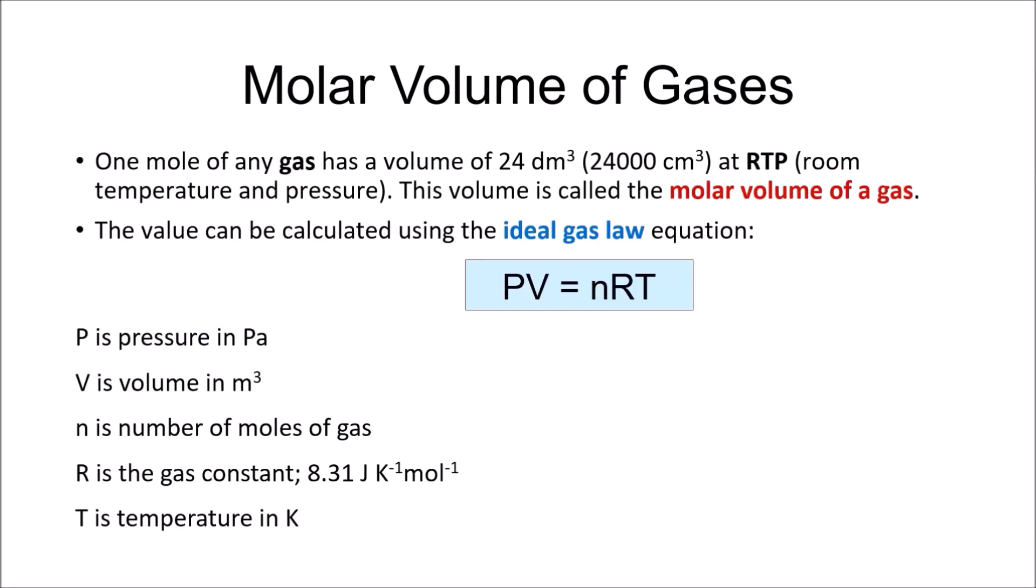Okay so you will have learned in GCSE that one mole of any gas has a volume of 24 cubic decimetres at room temperature and pressure. This volume is called the molar volume of a gas and the value can be calculated by using the ideal gas law equation shown in the box below.